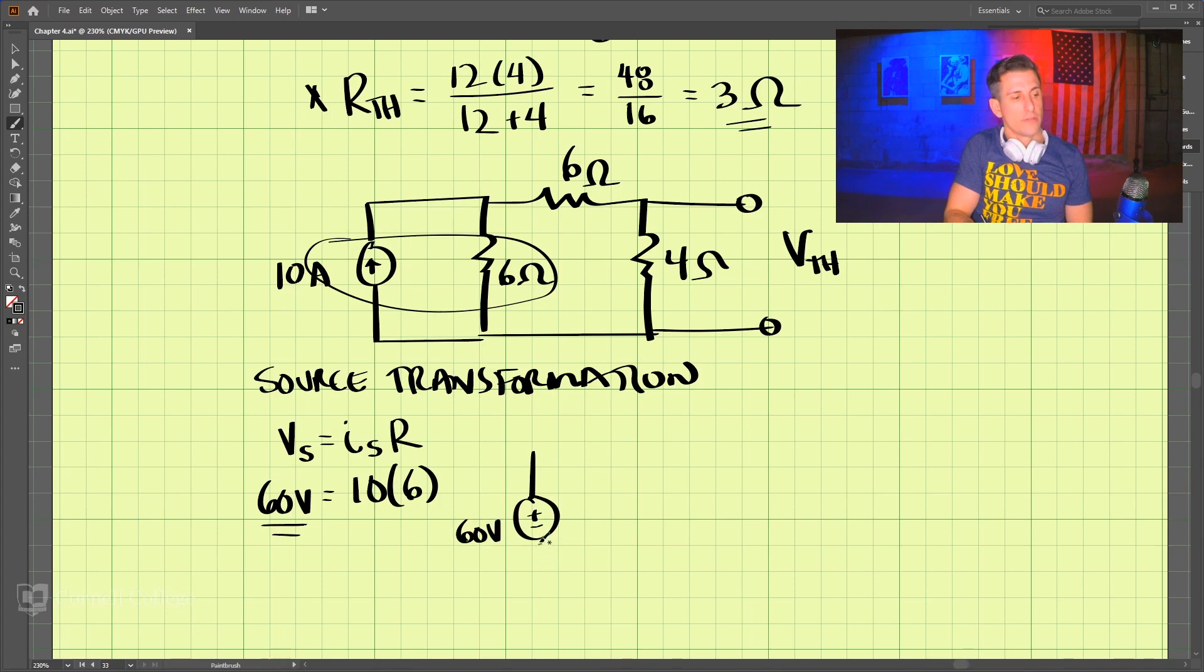So drawing this, now we have our 60 volts. And then it is in series with the 6 ohm resistor, which goes into another 6 ohm resistor. And then we have our 4 ohm resistor.